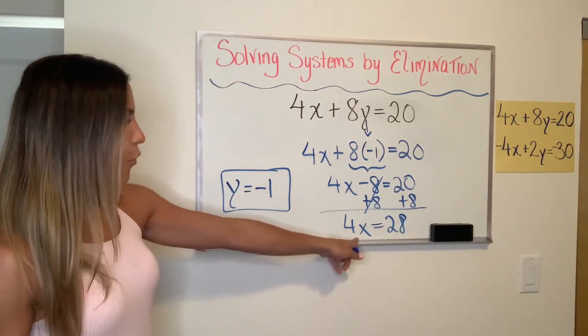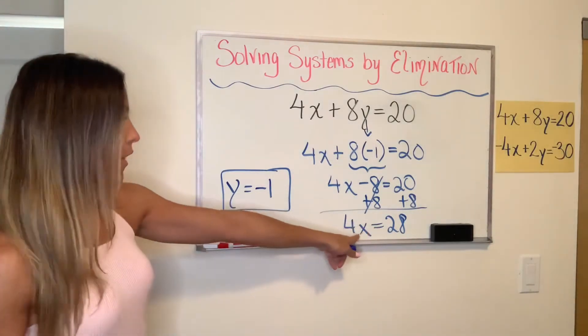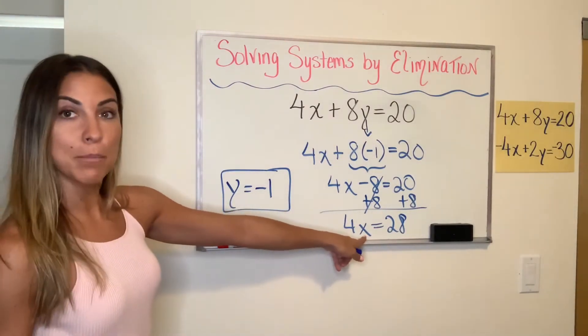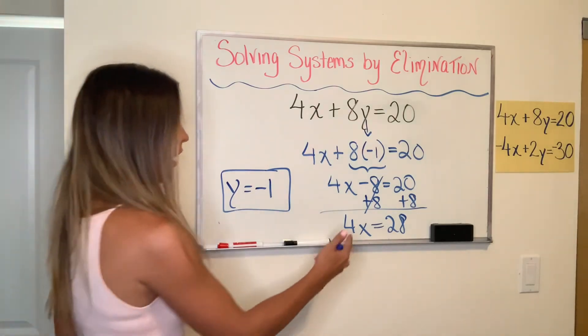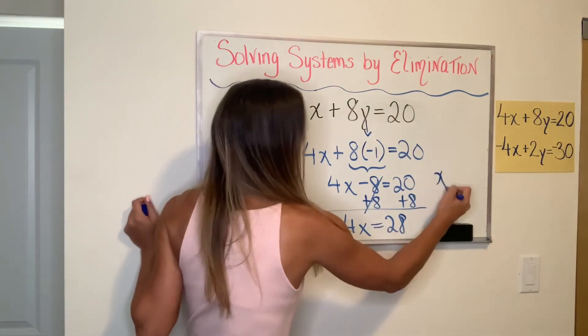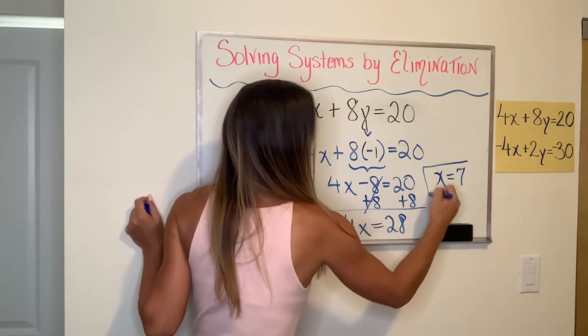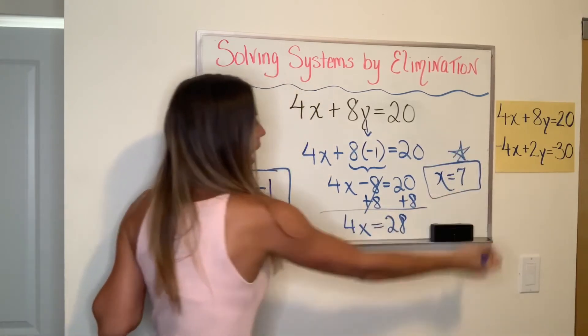Now I have a one-step equation. 4X equals 28. I want to get rid of that 4, which is being multiplied by X. So I do the inverse, which is to divide by 4. And when you divide by 4 on both sides, you're going to get X equals 7.